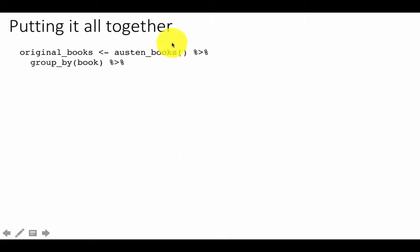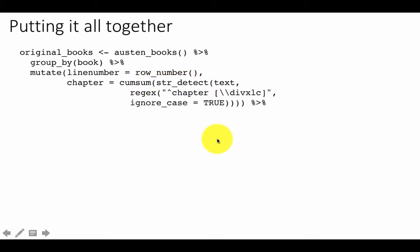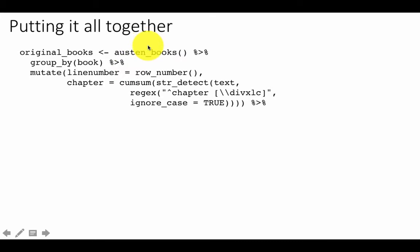Putting it all together: we call 'austen_books()', then group by book, then mutate with both 'line_number = row_number()' and 'chapter = cumsum(str_detect(text, regex(...)))'. This adds a line number column for each line within its book, and a chapter number column indicating which chapter the line belongs to. The text is still at the line level — we haven't broken it into words yet.